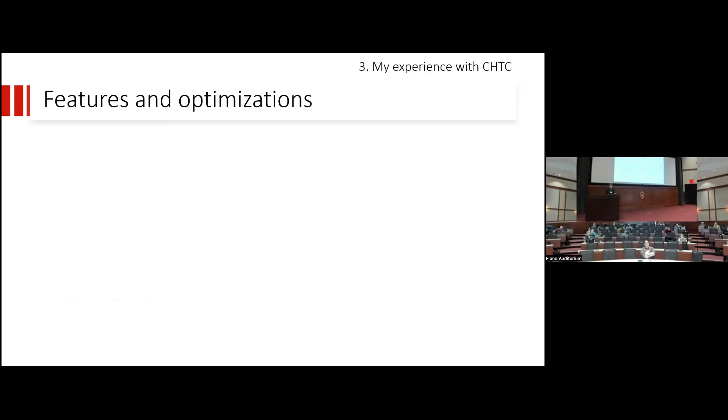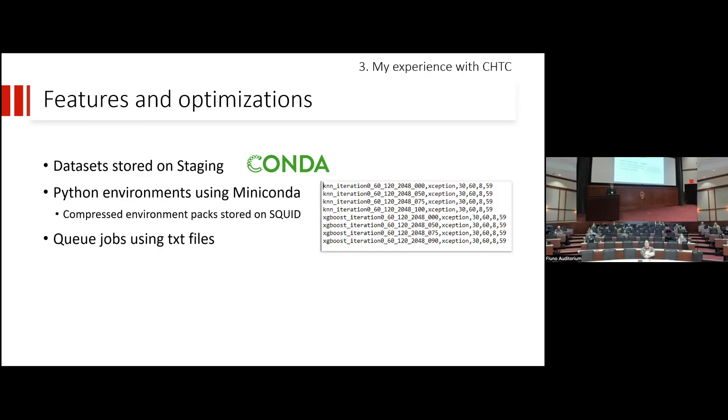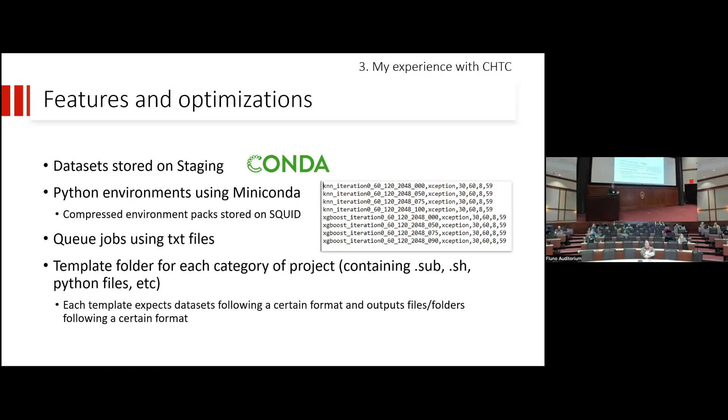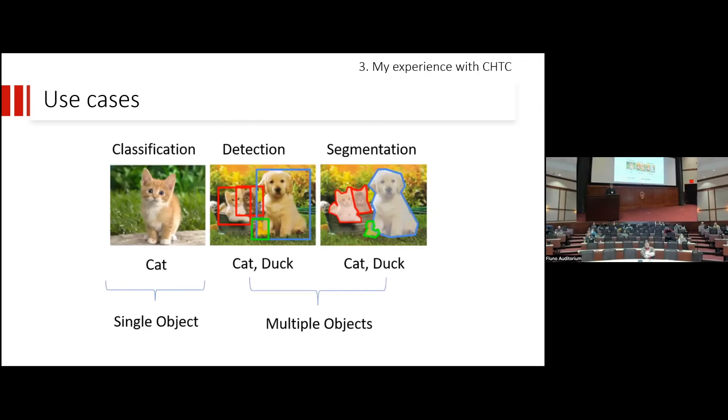The main way that I organize my projects is usually that I store data on staging because the image data sets can get pretty large. I use Python environments using Miniconda, which is really nice because for different tasks I can have different Python environments and I just set up which Python environment to use from a list of packed environments that I have in Squid. I usually queue my jobs using text files, which is really nice because I can easily set up different hyperparameters and different data sets to be used for each job to train a separate neural network. The most important part here is that I have different template folders for each category of project and I'm going to go through some examples of them and some use cases.